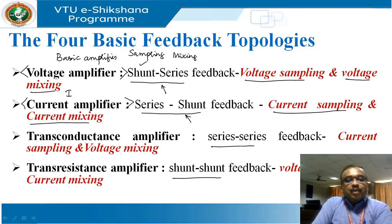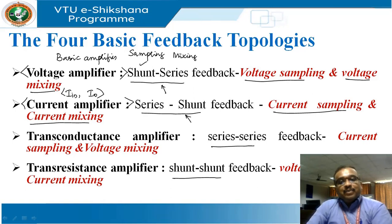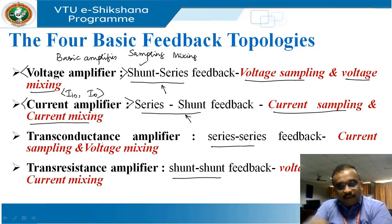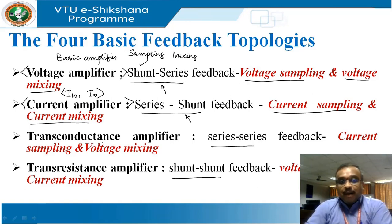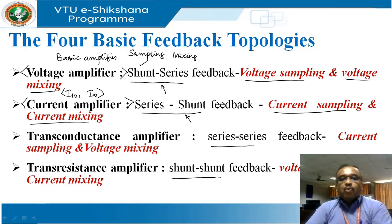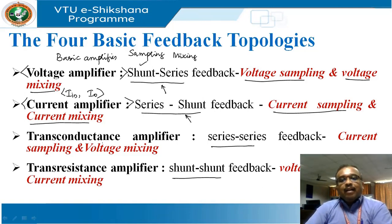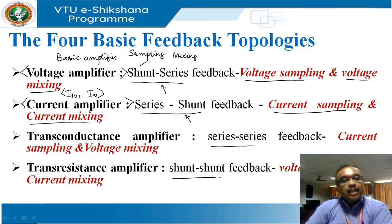In the current amplifier, both input and output quantities are current values. When sampling the current at the output, you tap it in series. When feeding back the current to the input as negative feedback, the feedback current IF comes out of the source IS in shunt — meaning IF is eliminated from IS, which is why it is called shunt for mixing.